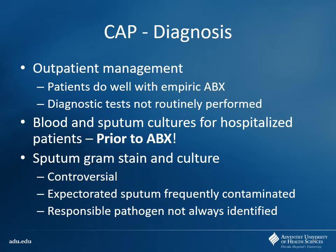With blood cultures, how many do you normally take? You want to take at least two, from different sites. One of the big problems is if you get something that grows staph epi, it's probably a contaminant. But if I get staph epi from both cultures, that probably tells me that's actually a true infection. So a lot of contamination can occur. When do I do the cultures in relation to antibiotics? Before — because if I give antibiotics first, there's a chance they could start killing bacteria and it won't culture out.